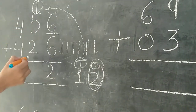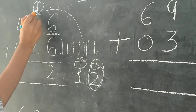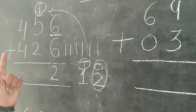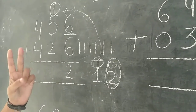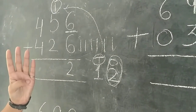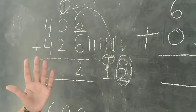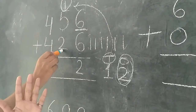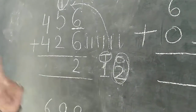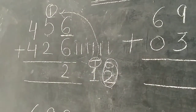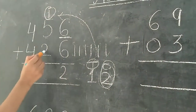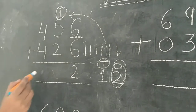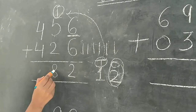Now we have to count this: 1. After 1 we count 5: 1, 2, 3, 4, 5, 6. After 6 we count 2 more: 6, 7, 8. So we write here 8.